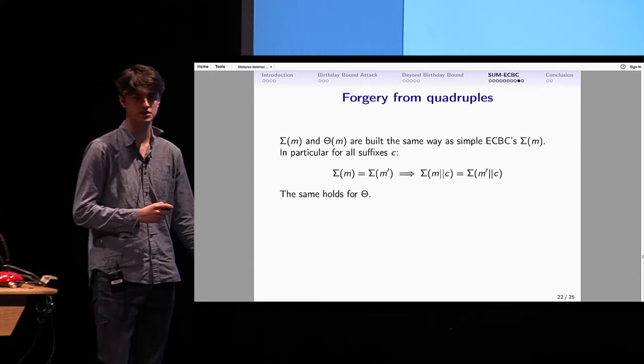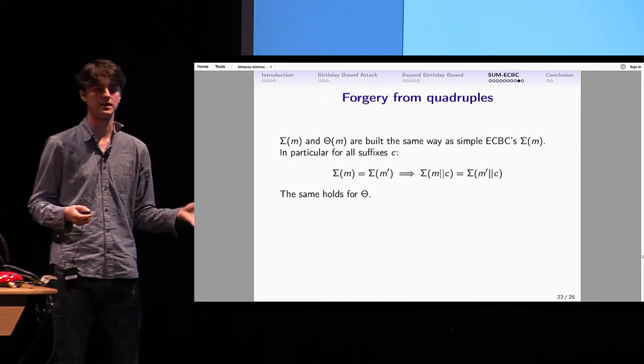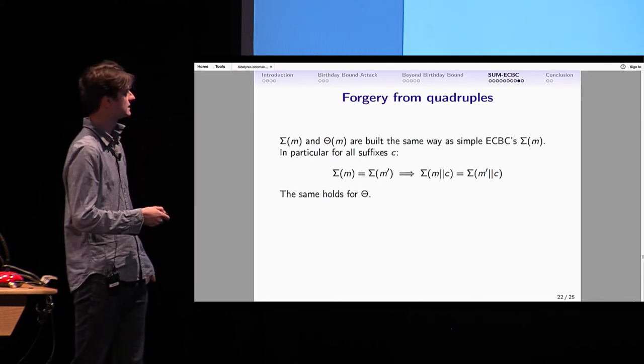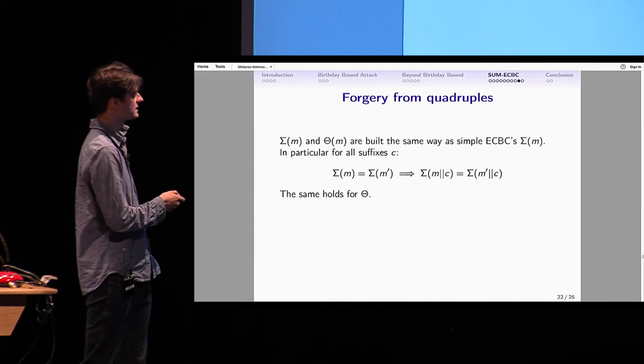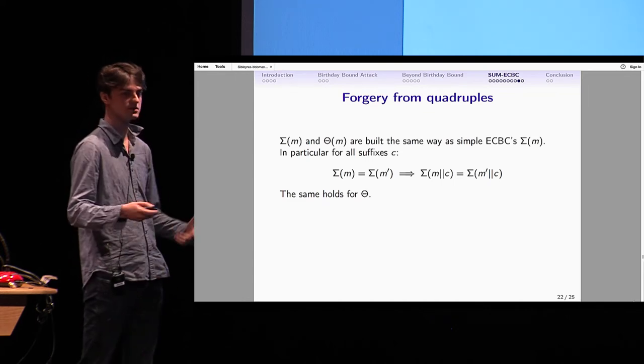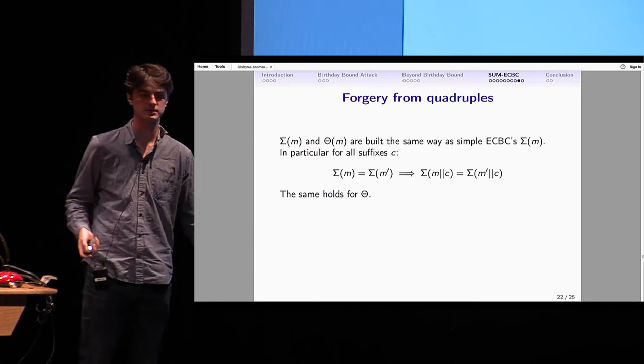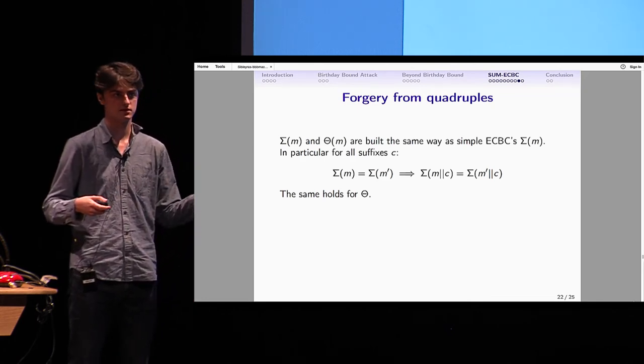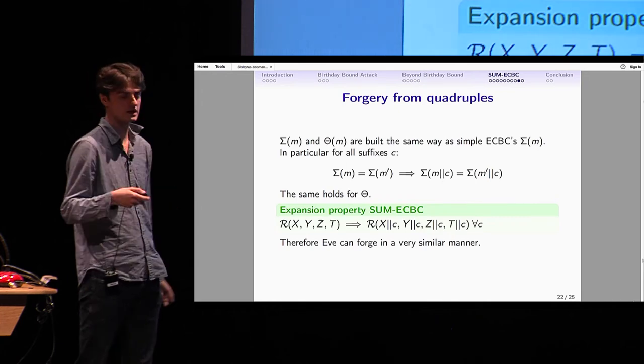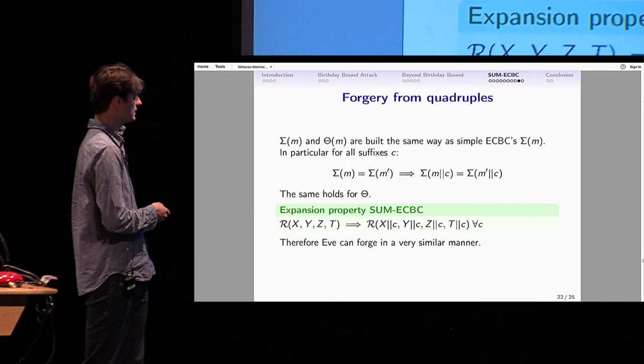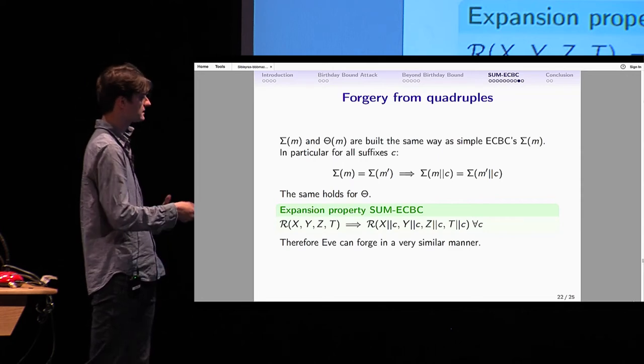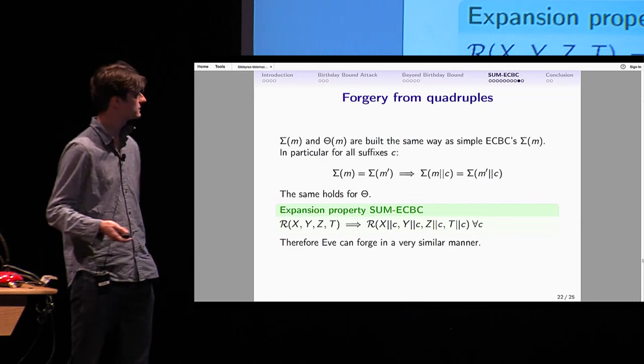Imagine you use the method you want and you found a quadruple. I've yet to show you how you can do forgeries using those quadruples. It works quite the same way as the simple ECBCs. For a good reason: the sigmas and thetas are actually like simple ECBC internal states. In particular, you still have this expansion property that if the sigmas are equal, you add the same suffix, you keep the sigmas equal. R is just a relation, a collection of equalities between sigmas and thetas. So we have this kind of same expansion property for SumECBC. That is, if we have X, Y, Z, and T that satisfies R, then adding the same suffix to X, Y, Z, and T, we still get a quadruple that satisfies R. In particular, the MACs will XOR to zero.